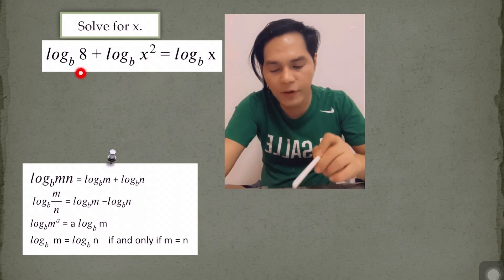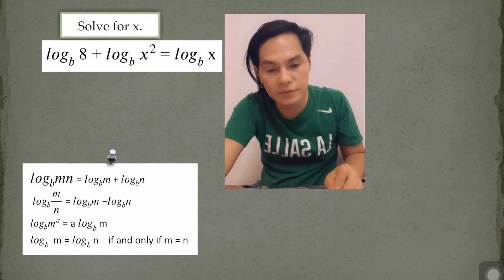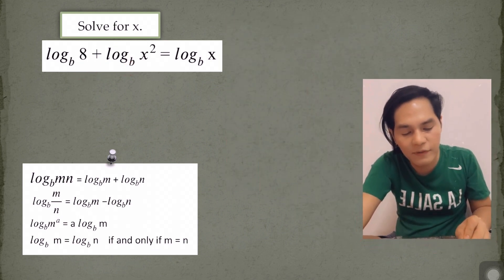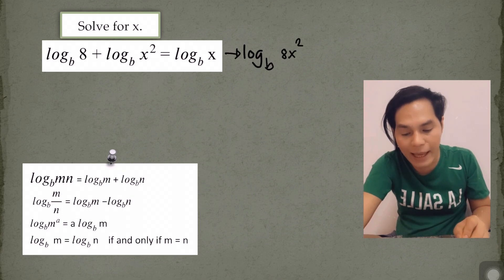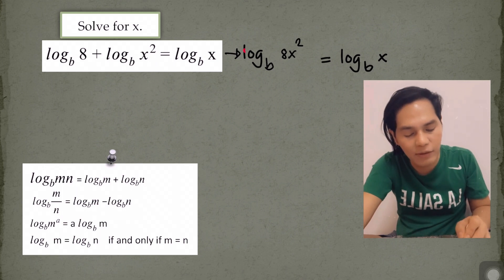Next equation here. So from addition to multiplication, that's why we have here the log of 8x squared to the base b, and just copy the right side of the equation. So now in a single form, we can just cancel log of the same base, and the remaining expression in both sides of the equation is 8x squared is equal to x.